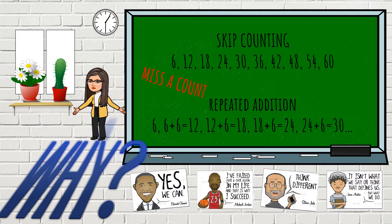So you may go 6, 12, 24, 30, 36 and you miss a count entirely. You may also make careless mistakes when you are adding. So you may not be getting the number accurately.